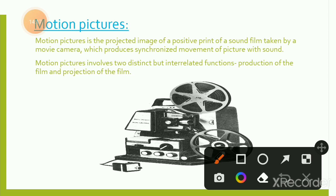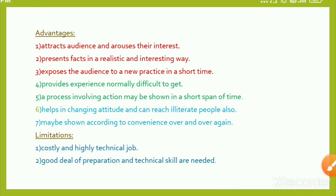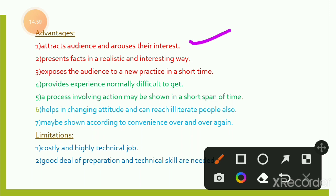Motion pictures: a motion picture is the projected image of a positive print of film taken by a movie camera, which produces synchronized movement of pictures with sound. These were used in older movie cameras to display pictures on screen before color movies came. Motion picture involves two distinct but interrelated functions: production of the film and projection of the film. Advantages: attracts audience and arouses interest; presents facts in a realistic and interesting manner like a live stream; exposes the audience to new practices in a short time. Limitations: costly and highly technical — technical knowledge is required to operate it.